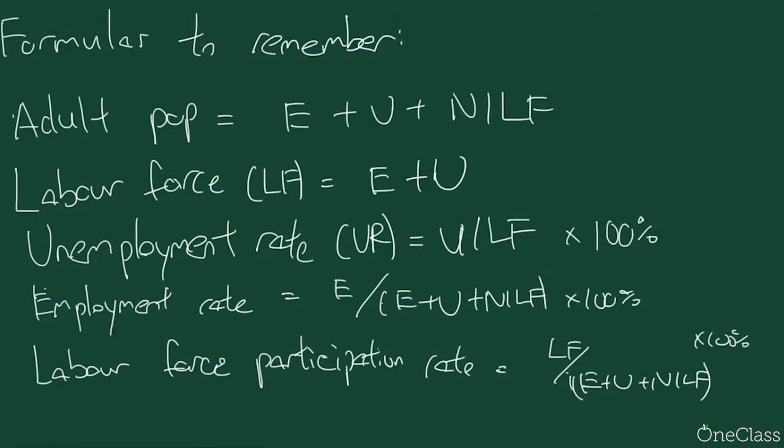When dealing with exam questions related to unemployment, there are five key formulas to remember. First: adult population equals employed plus unemployed plus those not in the labor force. Second: labor force equals employed plus unemployed. Third: unemployment rate equals unemployed divided by labor force times 100%. Fourth: employment rate equals employed divided by adult population times 100%. Fifth: labor force participation rate equals labor force divided by adult population times 100%.